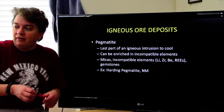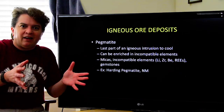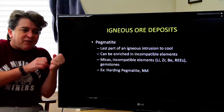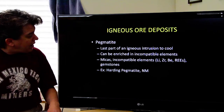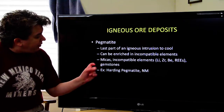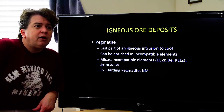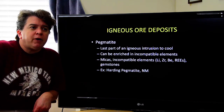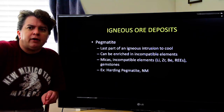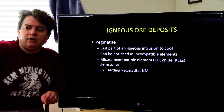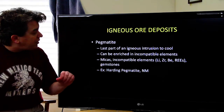That's why in the pegmatite — the last part of the liquid rock to cool — these elements get concentrated. They're antisocial; they hang out until that last part cools, and then they're forced to form minerals. In pegmatites, we often get micas and gemstones. Beryl, for example: if it's gem quality and blue, it's aquamarine; if it's gem quality and green, it's emerald.